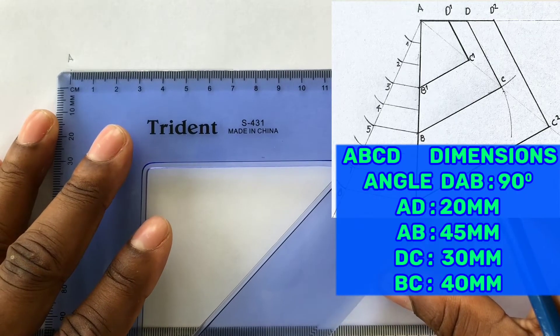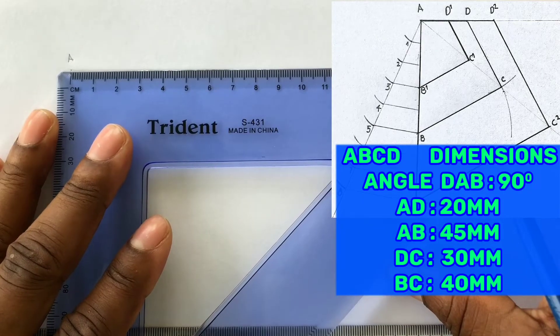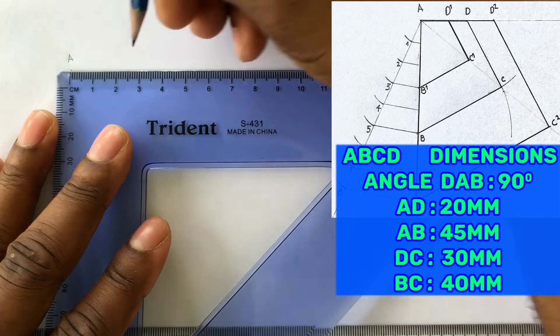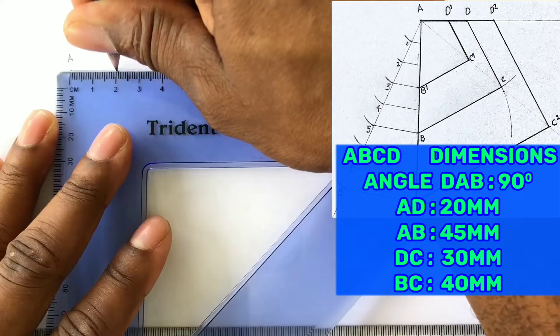On the horizontal line from point A, identify 20 millimeters and label this point D.